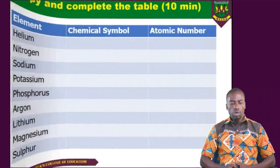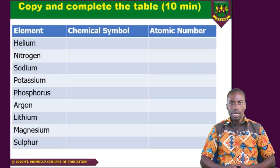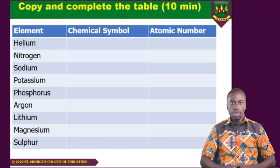Now before we continue with the units, I want you to use this as a diagnostic tool to check yourself. If you're able to complete this and have all your answers correct, then you proceed to the unit. If not, just put it down. Go and revise your periodic table — at least the first 20 elements — and then come back to complete the unit.